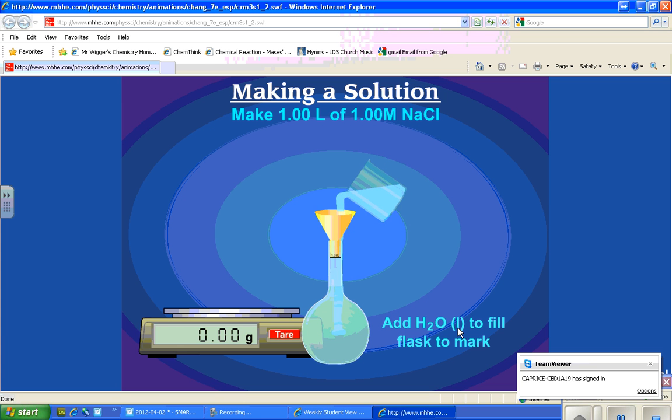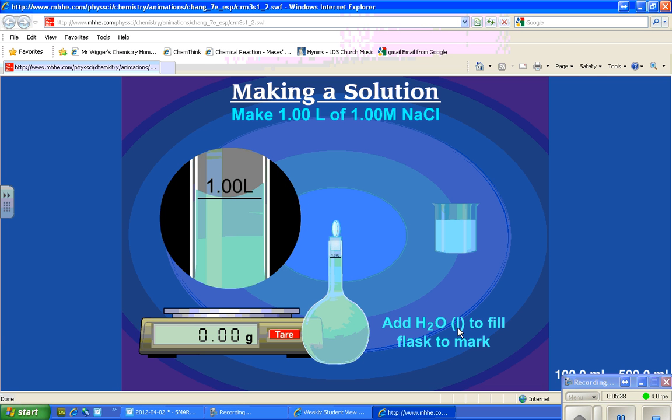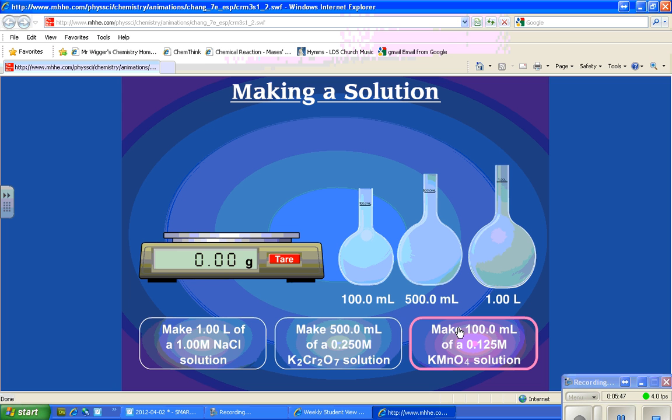Once it's all dissolved, we can go ahead and fill it. But from the beaker, we only want to fill it up partially, just a little bit below the line. Then we take a dropper, and that gives us more control so we don't overshoot. You can see the bottom of the meniscus was right on the line. From that, we know that we've got exactly the 1.00 liter of solution, exactly the right amount of stuff, and we've created as accurate a solution as we can possibly make.